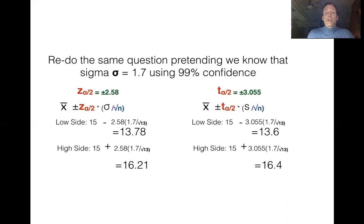Okay, so when we look at the difference between our interval and t versus z, on the low side we have a 13.78 compared to a 13.6. On the high side, a 16.21 compared to 16.4. Now the differences between what you have between the 13.78 compared with 13.6, that's a very minuscule difference. The difference between 16.21 is a very slight difference against the 16.4.